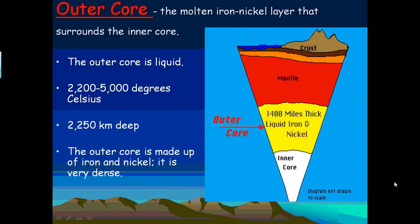The outer core is the third layer down. It is a molten iron and nickel layer that surrounds the inner core. The outer core is liquid.